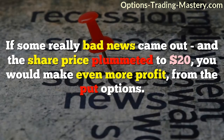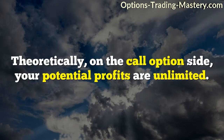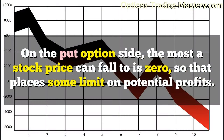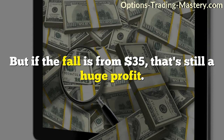If some really bad news came out and the share price plummeted to $20, you would make even more profit from the put options. Theoretically, on the call option side, your potential profits are unlimited. On the put option side, the most a stock price can fall to is zero, so that places some limit on potential profits. But if the fall is from $35, that's still a huge profit.